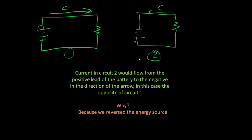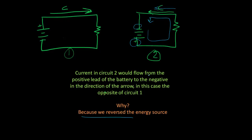In circuit two, we've turned the battery around backwards — the positive is here and the negative is here. Current is now flowing in the opposite direction. We've basically altered the current direction by changing the direction of the battery — we reversed the energy source.